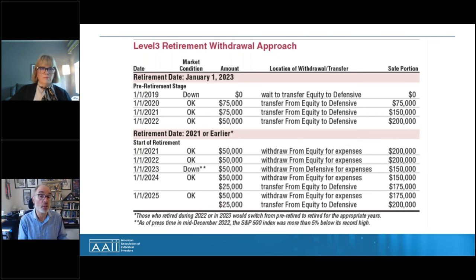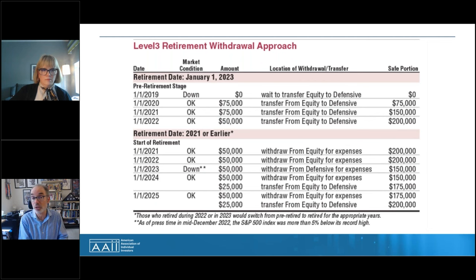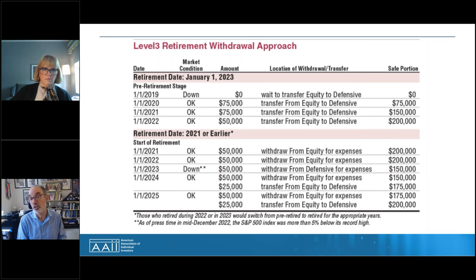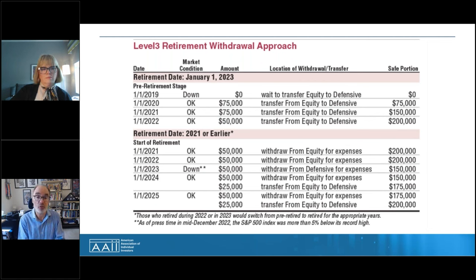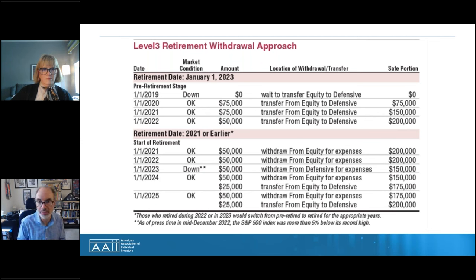Jim Cloonan advocated that in the years leading up to retirement, whenever the market is near its high, you start funding those defensive assets. Once in retirement, if the stock market was within 5% of its high at year-end, you withdraw from your equity portion; when the market was more than 5% off its highs, you tap from your safe assets. The whole argument is to avoid selling stocks when they're down — you give your portfolio the chance to recover rather than withdrawing from your equity portion during a correction.